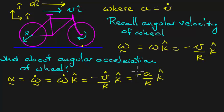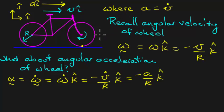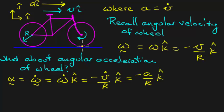Take a moment to verify that the minus sign makes sense. If a is positive, the bike is going faster and faster in the i-hat direction, so the wheel turns at a greater rate of rotation in the clockwise direction. A clockwise rotation corresponds to an angular velocity into the screen — in the minus k-hat direction — and since that angular velocity is increasing, the angular acceleration is also in the minus k-hat direction.